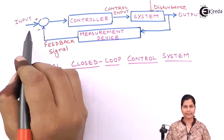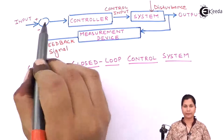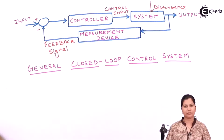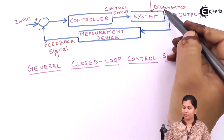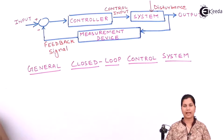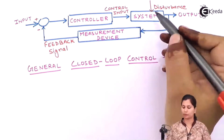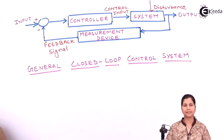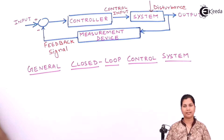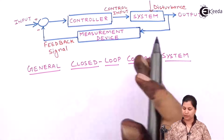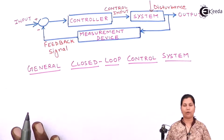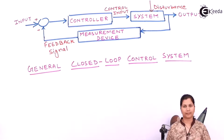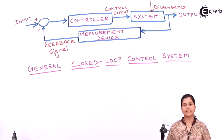Again the comparison is made and according to the input the output will be changed. There are also some disturbances acting on the system, represented by the disturbance input. These disturbances can be noise or unwanted signals which we don't want in our system. This is the general block diagram of a closed loop control system. Now let's see some examples of closed loop control systems.